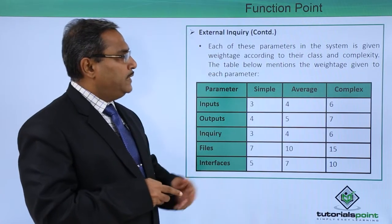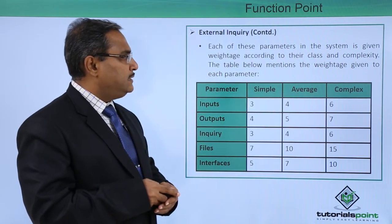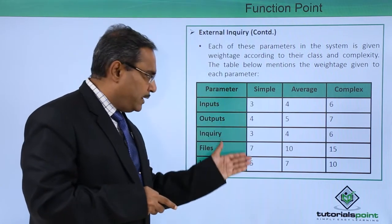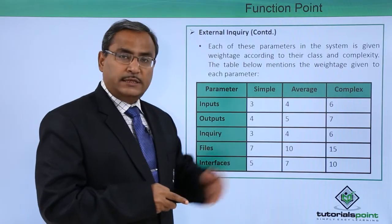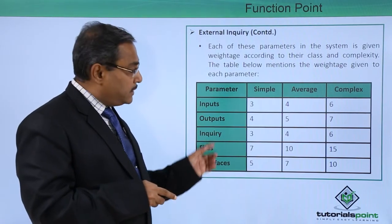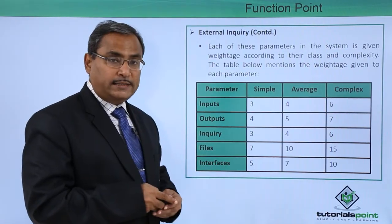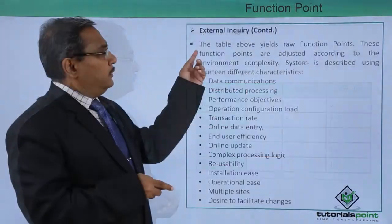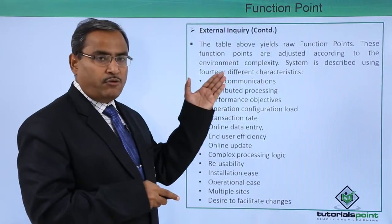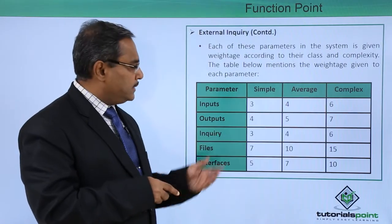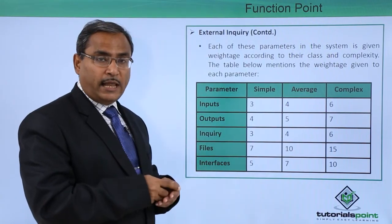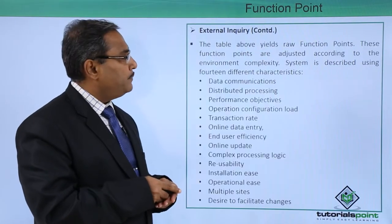Each of these parameters in the system is given weightage according to their class and complexity. We have 3 categories and 5 parameters with respective weightages assigned. The table on the previous slide yields the raw function points. Using these weightages and the respective parameters, we can easily calculate the raw function point. These function points are then adjusted according to the environment complexity.